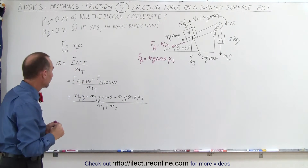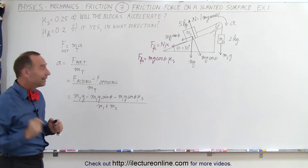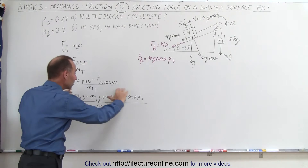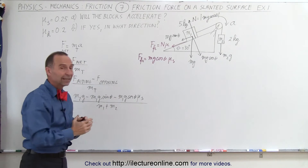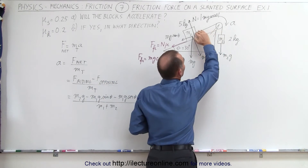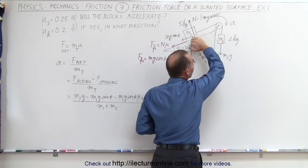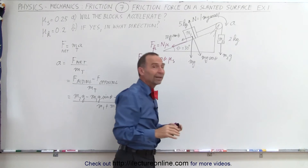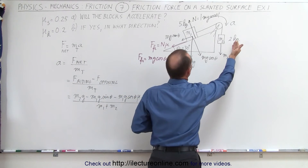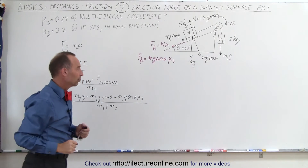Now if this quantity is positive, then we know there will be an acceleration. However if this quantity is negative, then there will not be an acceleration in the direction assumed, and we'll have to do the problem again, changing our assumption that the system accelerates in the opposite direction and reworking the whole problem from that perspective.